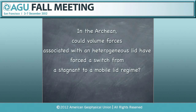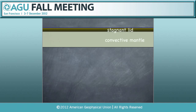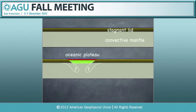The question I want to address is: in the Archean, could volume forces associated with a chemically heterogeneous lid have forced a switch from a stagnant lid to a mobile lid regime? I'm going to consider a situation where an oceanic plateau develops, and I'm interested to know if that oceanic plateau is enough to move from a stagnant lid regime to one driving a kind of plate tectonic process.